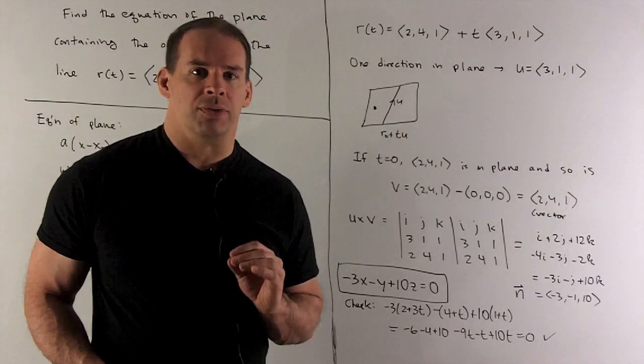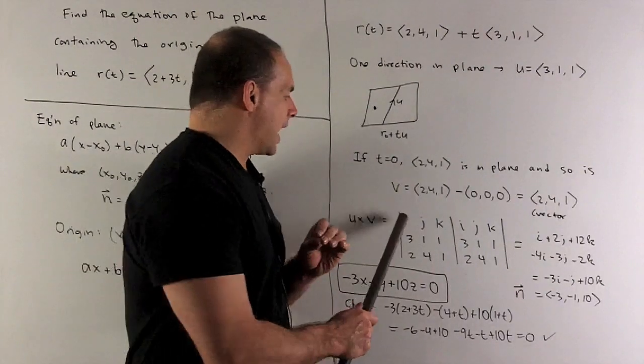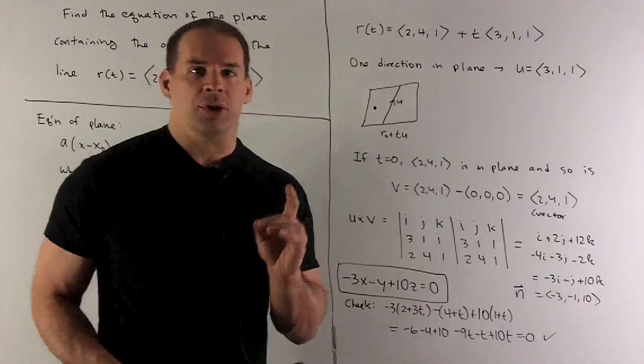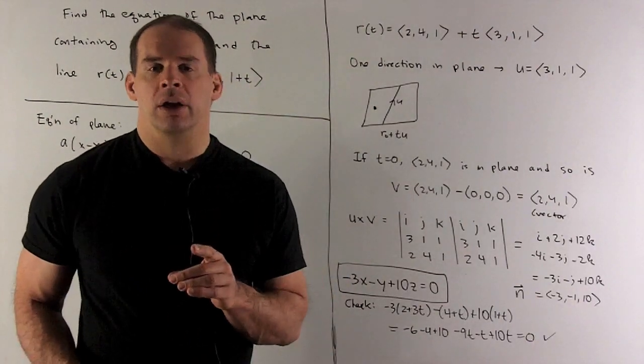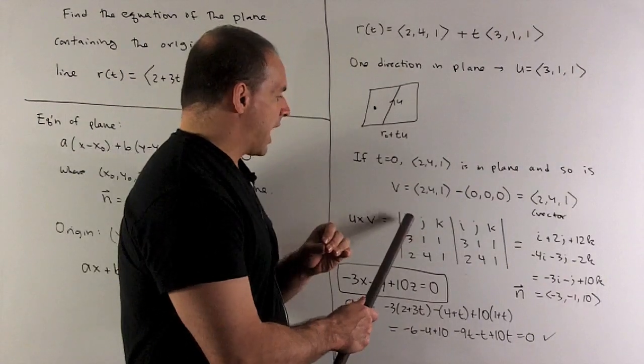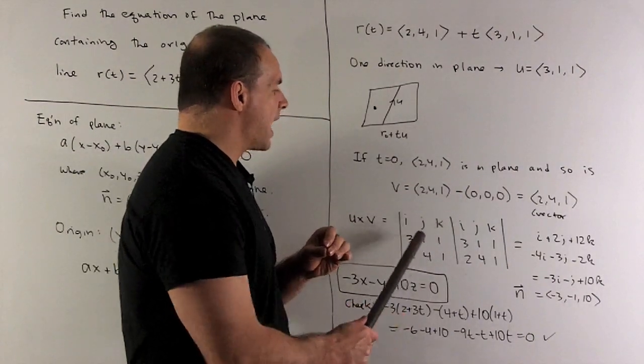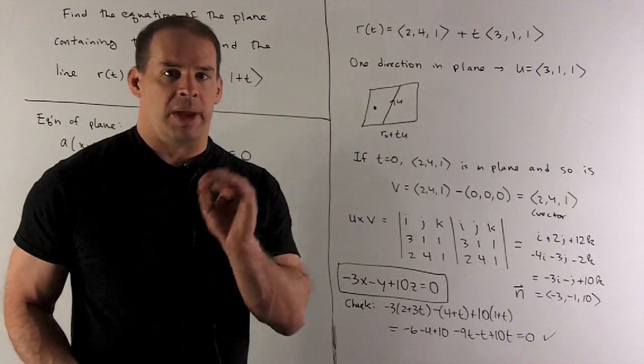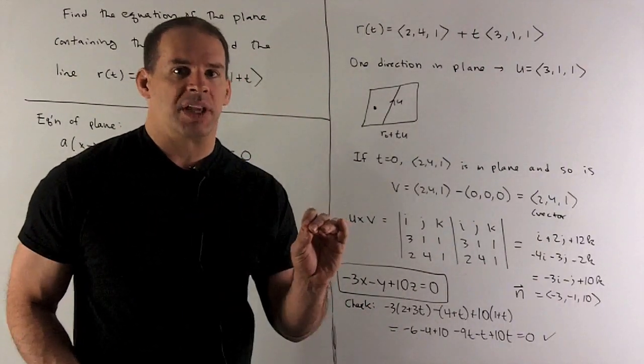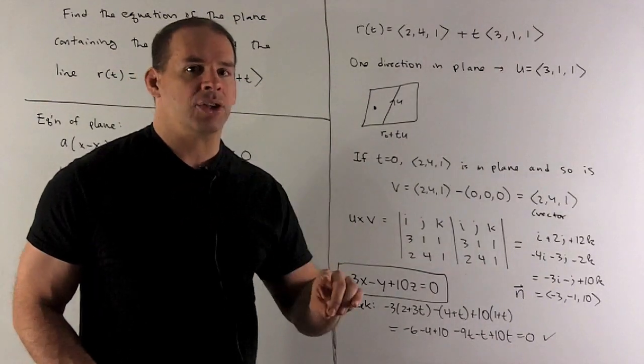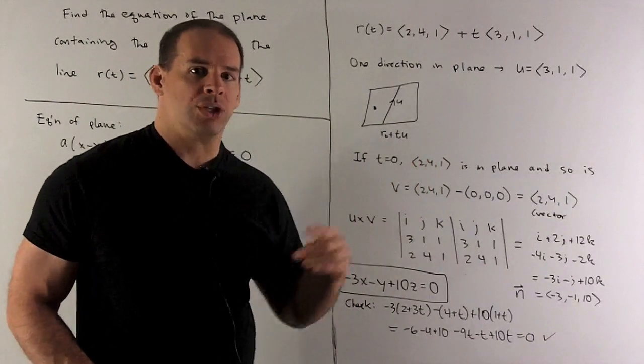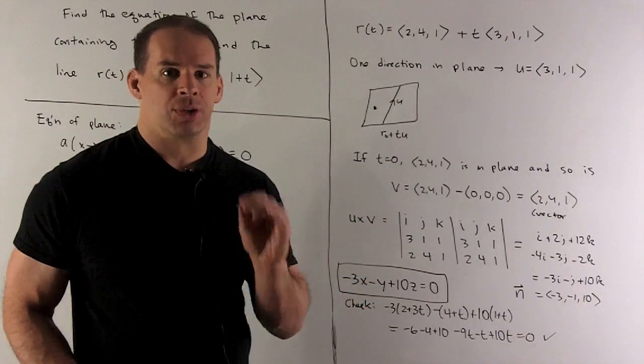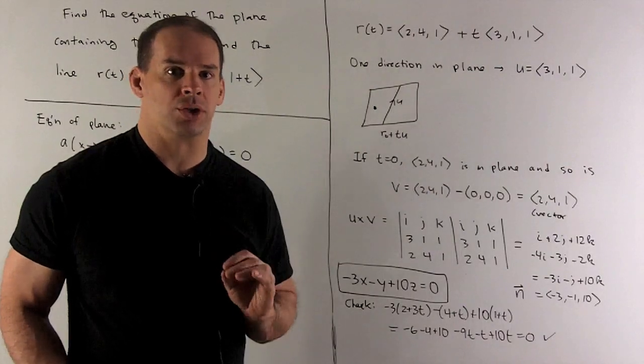So cross product of two vectors, what do we do? I put i, j, k, I load in 3, 1, 1, 2, 4, 1, and then you have two ways you can go from here. You can either do the business of take i, forget about these guys, and then just take the cross, and then do that for each of those, or you can take your matrix, put it next to itself, and then it's just going down the first three diagonals, then backwards, three diagonals, take their difference. It'll get you the same answer, so whichever one is easier for you to keep under control.